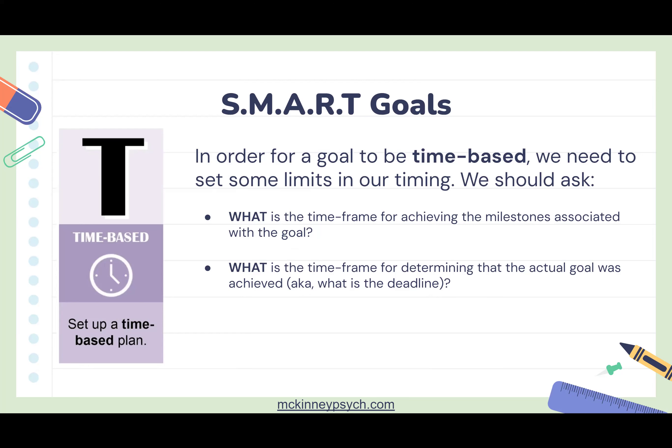Remember when we looked at making our goal Specific, one of the questions was how we can break our goal into mini milestones to make the big goal more digestible. We want to consider setting time bounds on each of those smaller milestones so we can track progress and make sure things are getting done in a timely manner. For example, if your goal was to read a novel by a specific date, and you set that goal two weeks ago with no specific plan...